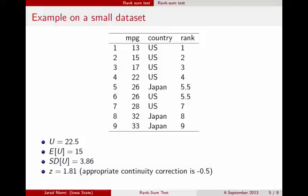The next step is to calculate the Z statistic using the continuity correction — here, minus 0.5 was the appropriate one to use. Finally, we calculate the p-value using a standard normal table, and this p-value ends up being .07. This is just an example of the rank sum test on a small data set. What we actually want to do is perform this rank sum test on the full data set.